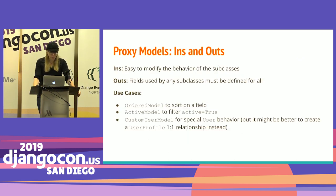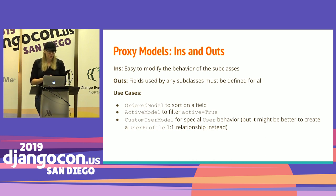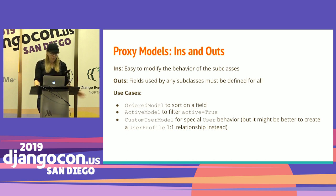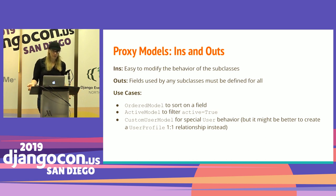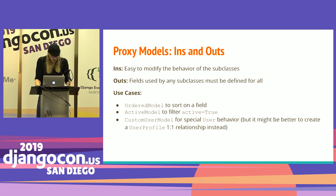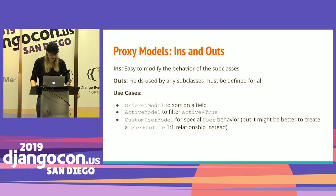The advantages of proxy models are that it's really easy to modify the subclass's behavior. The disadvantages are that fields used by any subclass must be defined for everyone on that one table. Use cases include an ordered model where you change sorting, or an active model where you filter out deactivated records for soft deletes. You can create a custom user model, but it might be better to think of it as a one-to-one relationship between user and user profile.